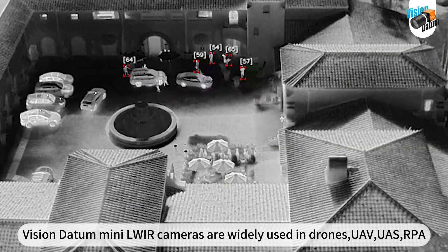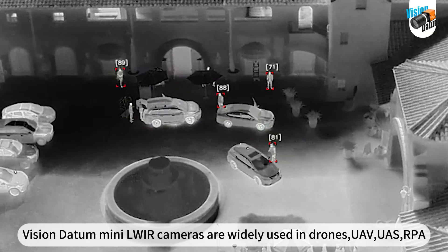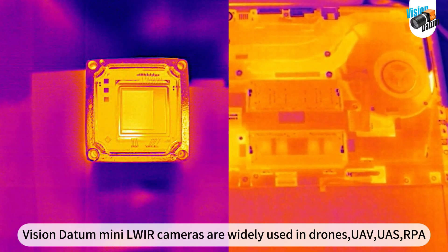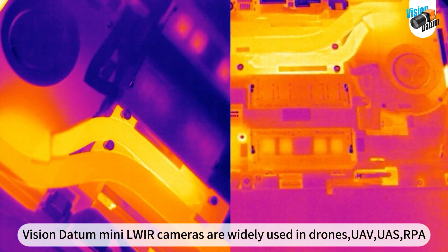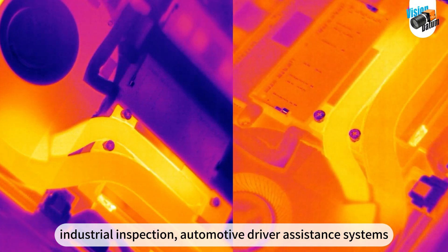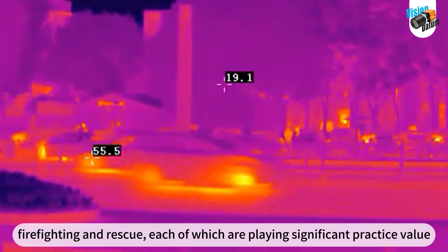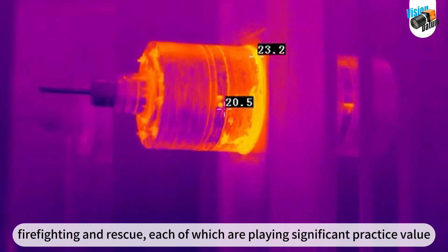VisionDatum Mini Longwave Infrared Cameras are widely used in drones, unmanned aerial vehicles, unmanned aircraft systems, remotely piloted aircraft, industrial inspection, automotive driver assistance systems, firefighting and rescue, each of which are playing significant practice value.